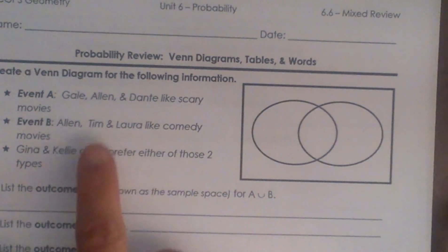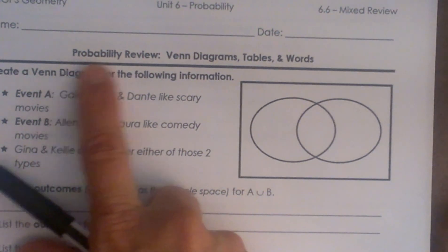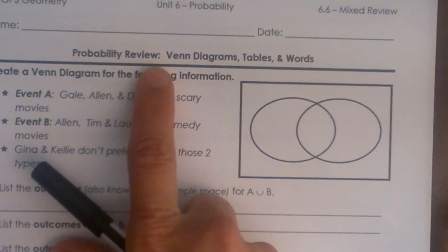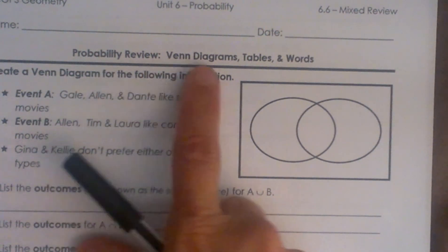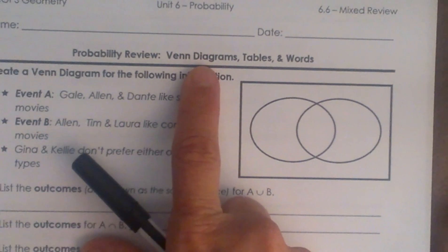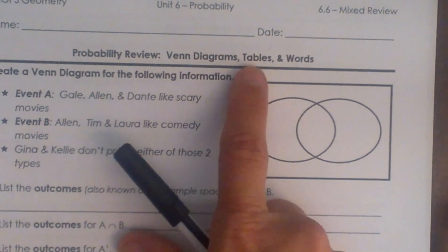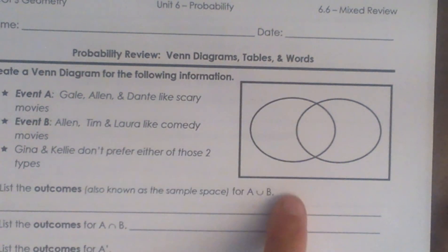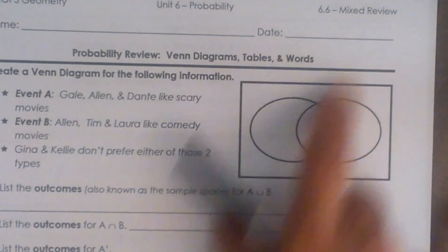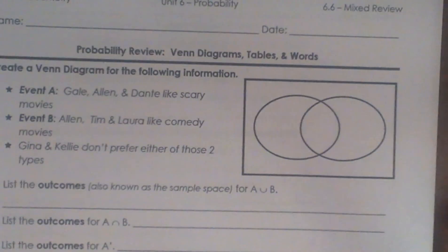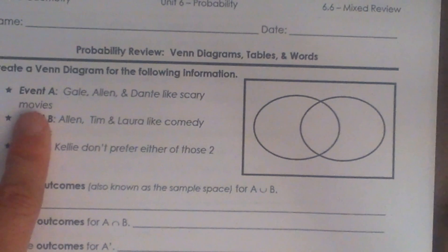I'm back to probability. We're going to do a probability review — Venn diagrams, tables, and words. It's kind of a mixed review. So let's see what we remember.